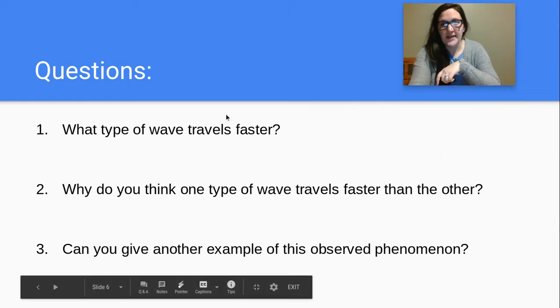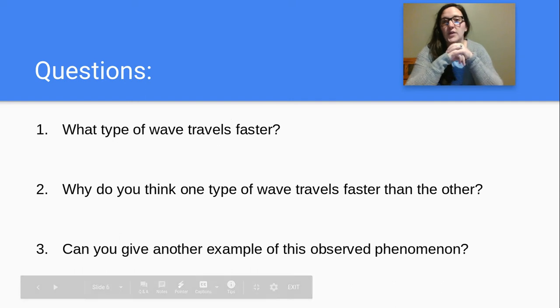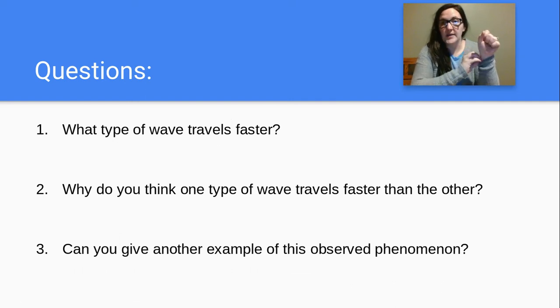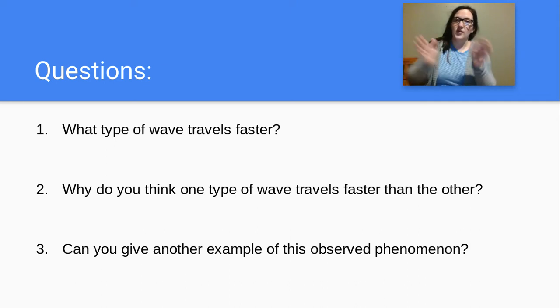What I want you to do is answer these three questions. You can make me a Google Doc or send me an email with your answers. Question one: what type of wave travels faster, a transverse wave or a longitudinal wave? Question two: why do you think one type of wave travels faster than the other? Here's a hint: it has something to do with your third vocabulary word yesterday, which was medium. If you think about what a medium is, it might help you answer question two.